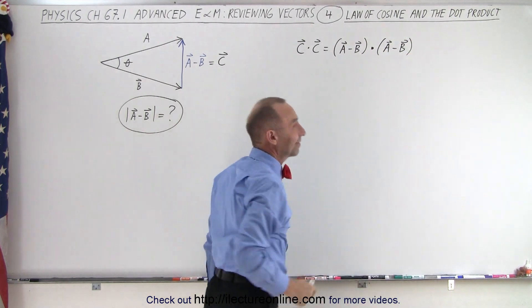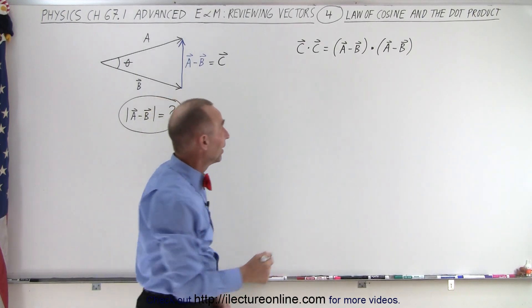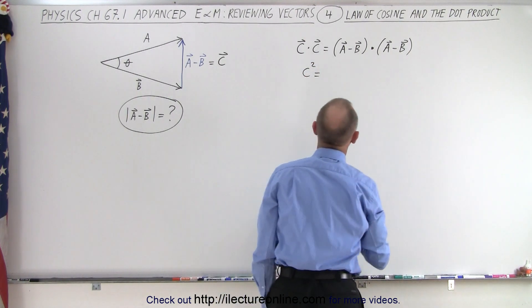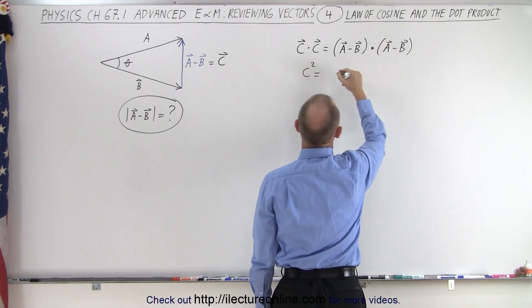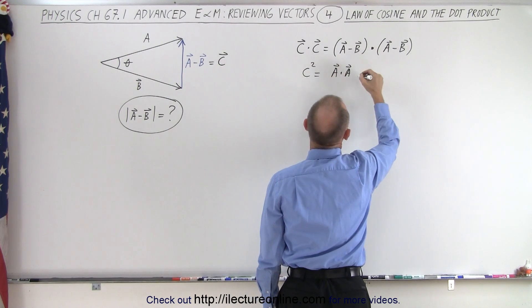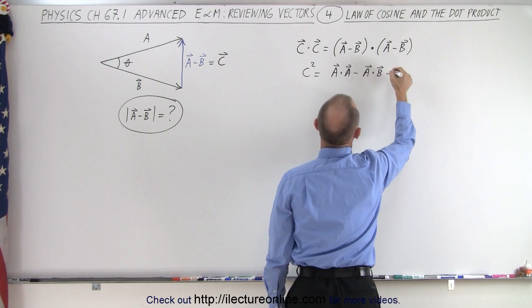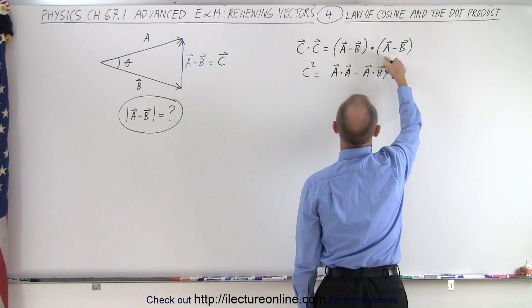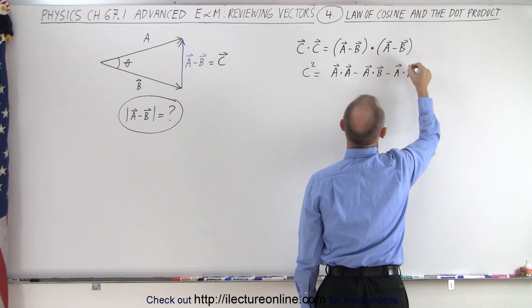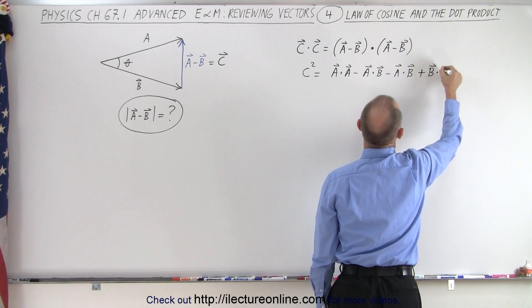And of course, c dot c, since the angle between c and c is 0, the cosine of 0 is 1, that's simply equal to c times c or c squared. And so that would be equal to a dot a minus a dot b minus a dot b, because b dot a is the same as a dot b. So a dot b, and then minus times minus would be plus b dot b.